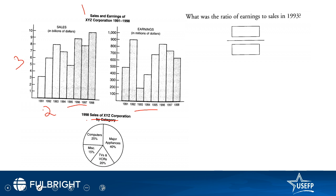The first part asks: what is the ratio of earnings to sales in 1993? For the ratio we need to write earnings first. The earnings in 1993 are slightly less than 200, so we approximate to 190 million. It's difficult to approximate precisely here, but in the exam it would be easier. Sales in 1993 are 8 million, so earnings divided by sales is 190 divided by 8.